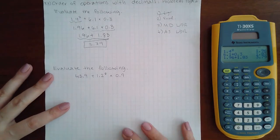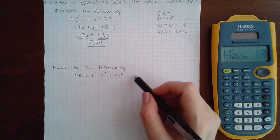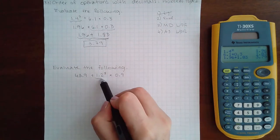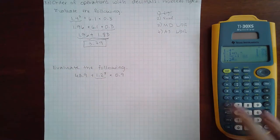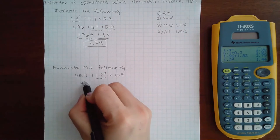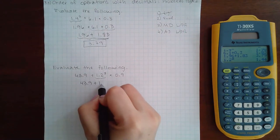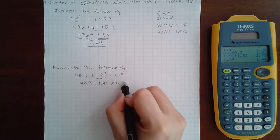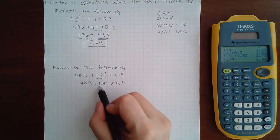Now here we've got to evaluate this one. So again, no grouping. I do have something to evaluate that needs to be done first, so 43.9 plus 1.44. Then I need to do my multiplying and dividing.